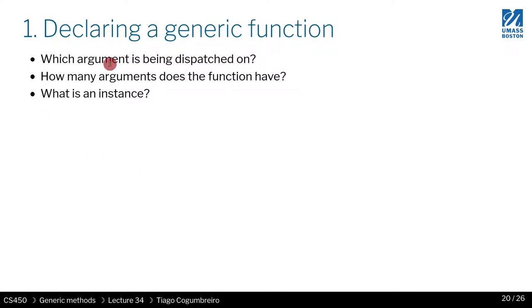So in summary, we have these questions. Declaring a generic function, we need to know which argument is being dispatched on, how many arguments does the function have, and what is an instance? Something being registered. The instance is the keys are predicates, and the values are functions as values. By predicates, I mean, is this our value question mark, or our number question mark, and so on.